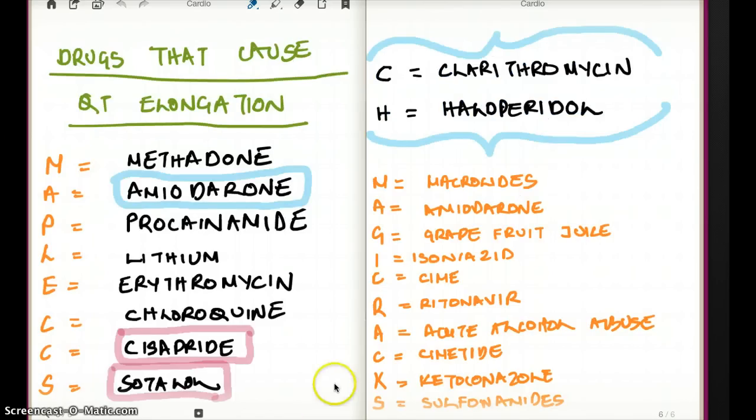Now, some drugs are notorious for causing Torsades. For example, Sotalol. This is a class III antiarrhythmic. And Cisapride. In fact, Cisapride was removed from the market because it causes death due to Torsades. So these are notorious. Cisapride is a GI drug.